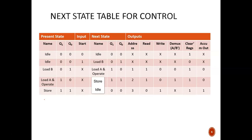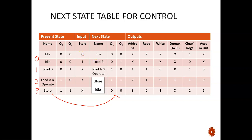Here is our next state table with the four states listed. Idle is state zero, load B data is state one, load A and perform the ALU operation is step two, and step three is where we store the result. After storing the result, the next state returns to idle. When in the idle state with start not activated, we remain in idle; but when start is activated, we move on to load B.